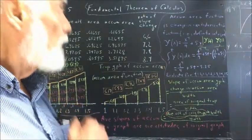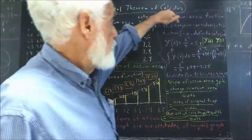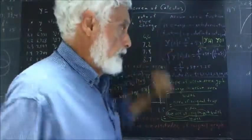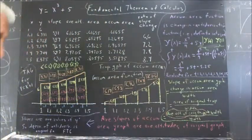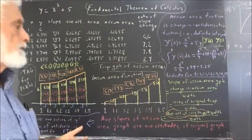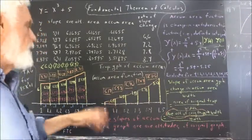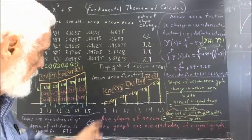So our accumulated area function is our change in antiderivative function. The accumulated area under the graph is just equal to the change in the antiderivative between our initial point and whatever point we're looking at.